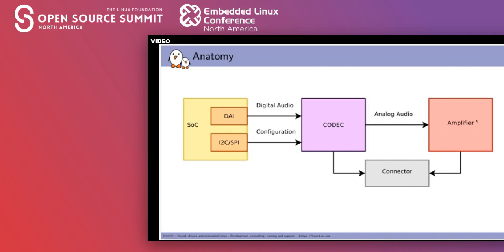The anatomy of an embedded system would be: on one side you get the SoC. The SoC will have two different kinds of connections to a codec, and that codec will either output analog audio directly to a connector or maybe through an amplifier. The two kinds of connection are first the configuration connection — typically I2C or SPI — and second the digital audio connection.